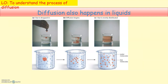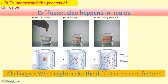Another example in liquid: if you drop ink or dye into a beaker of water, the ink is in high concentration at the point of entry but low concentration in other parts of the beaker. The particles then diffuse from the high concentration area to the low concentration area until the dye becomes evenly distributed throughout the water in the beaker.